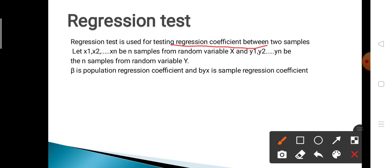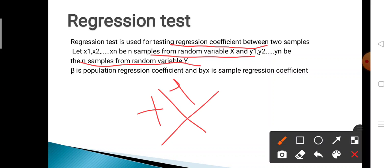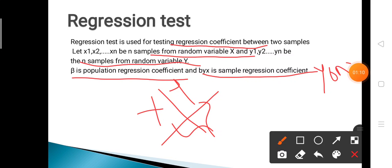Let x1, x2, ..., xn be the n samples from the random variable x, and y1, y2, ..., yn be the n samples from the random variable y. We want to test the regression coefficient between the two variables. Beta is the population regression coefficient and byx is the sample regression coefficient of y on x. There are two regression lines: y on x and x on y.